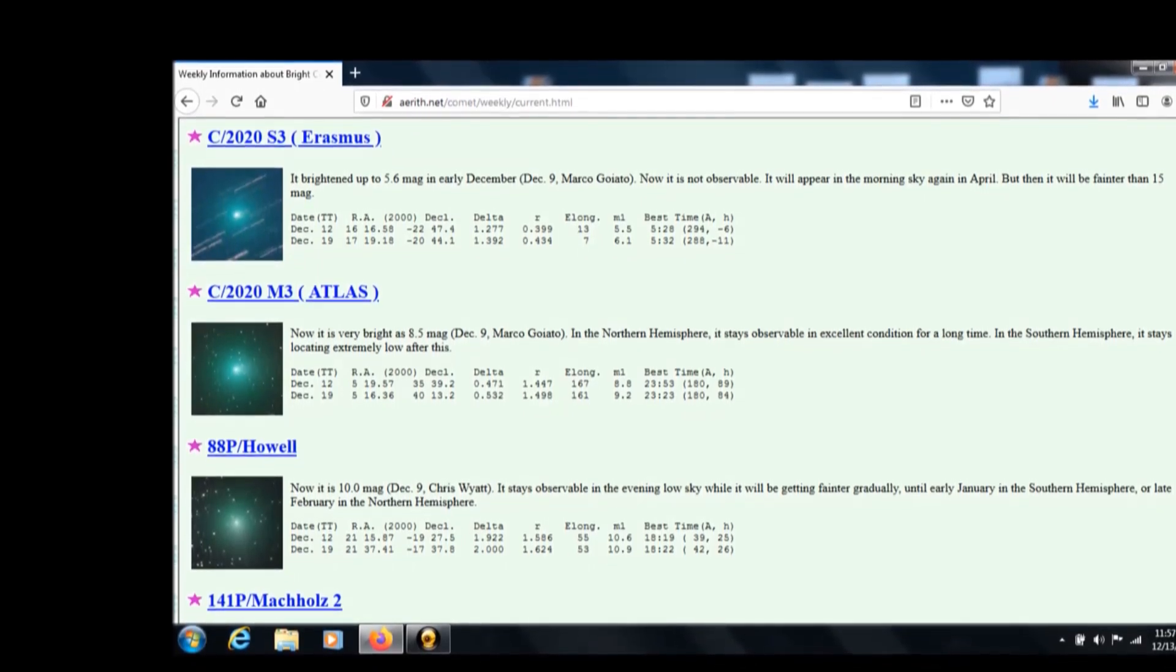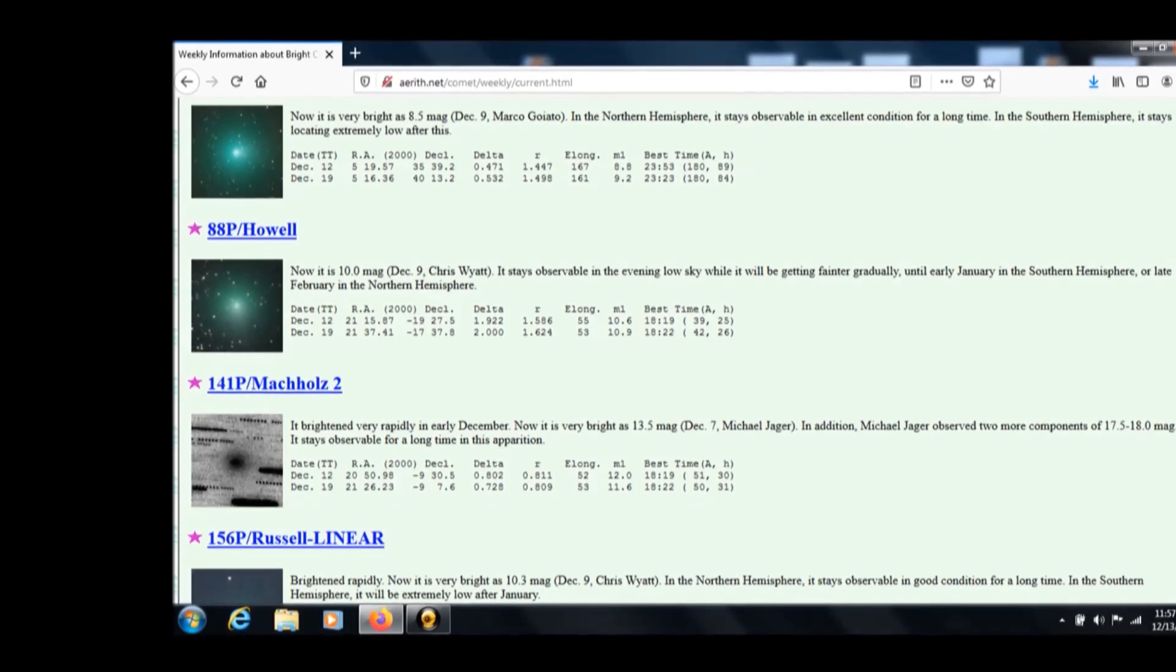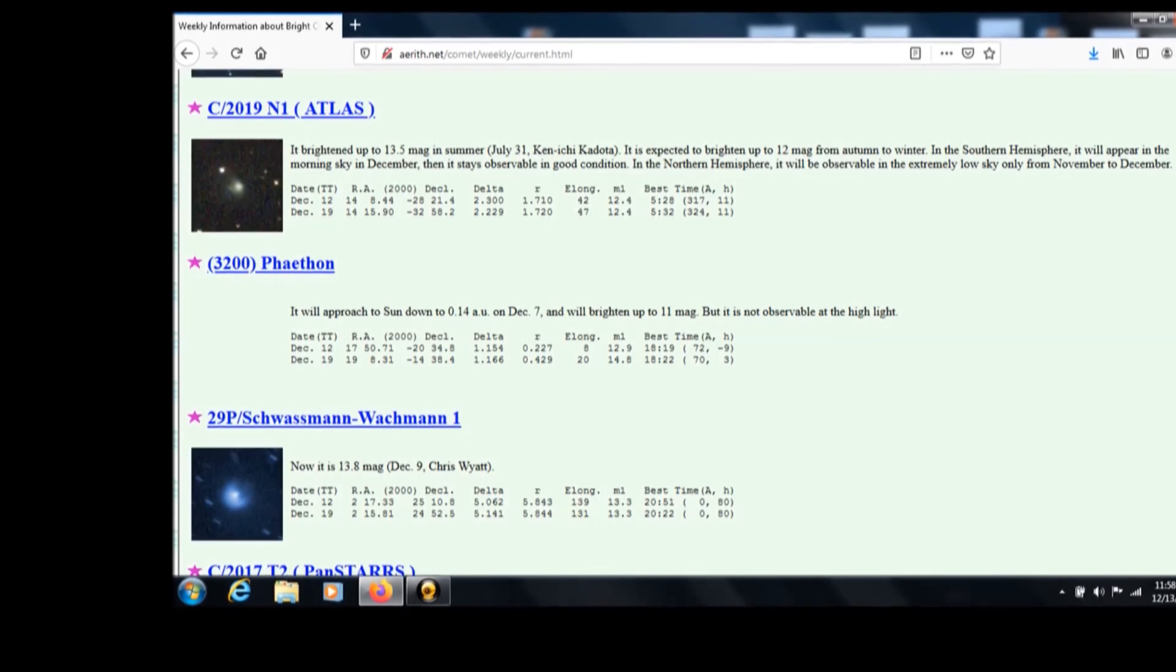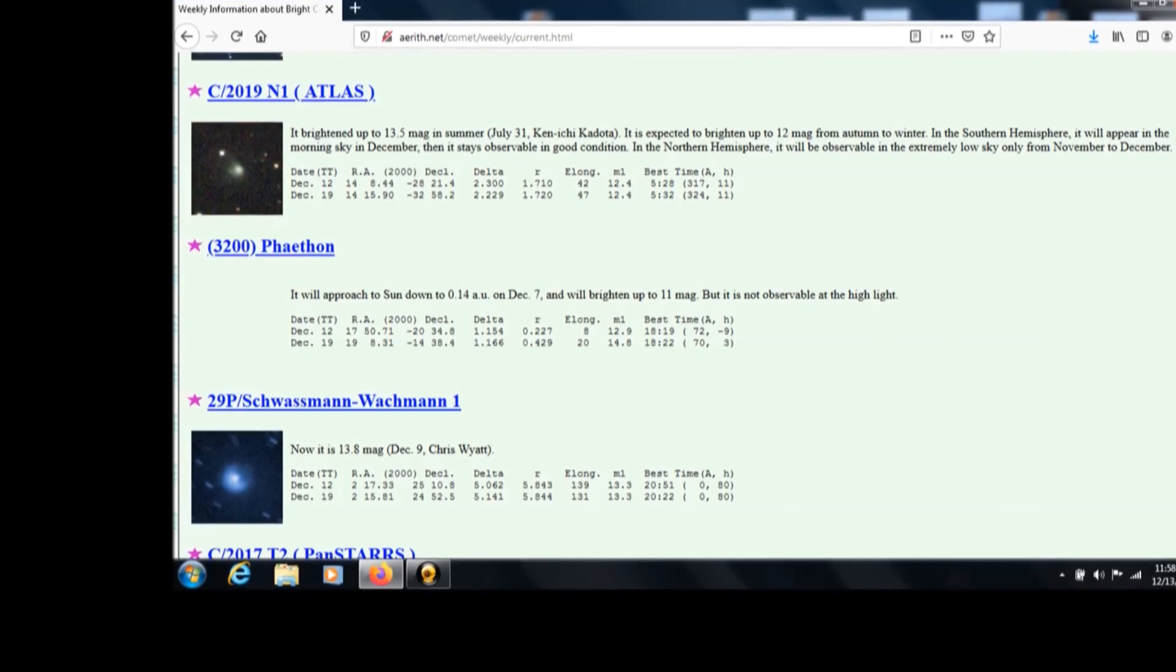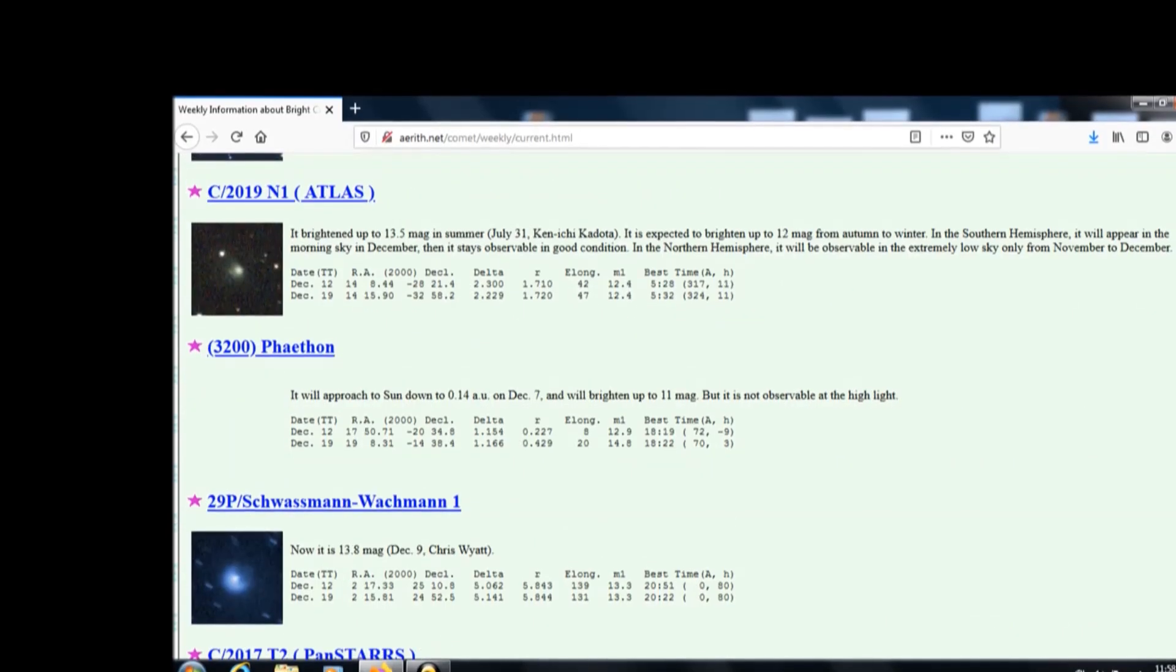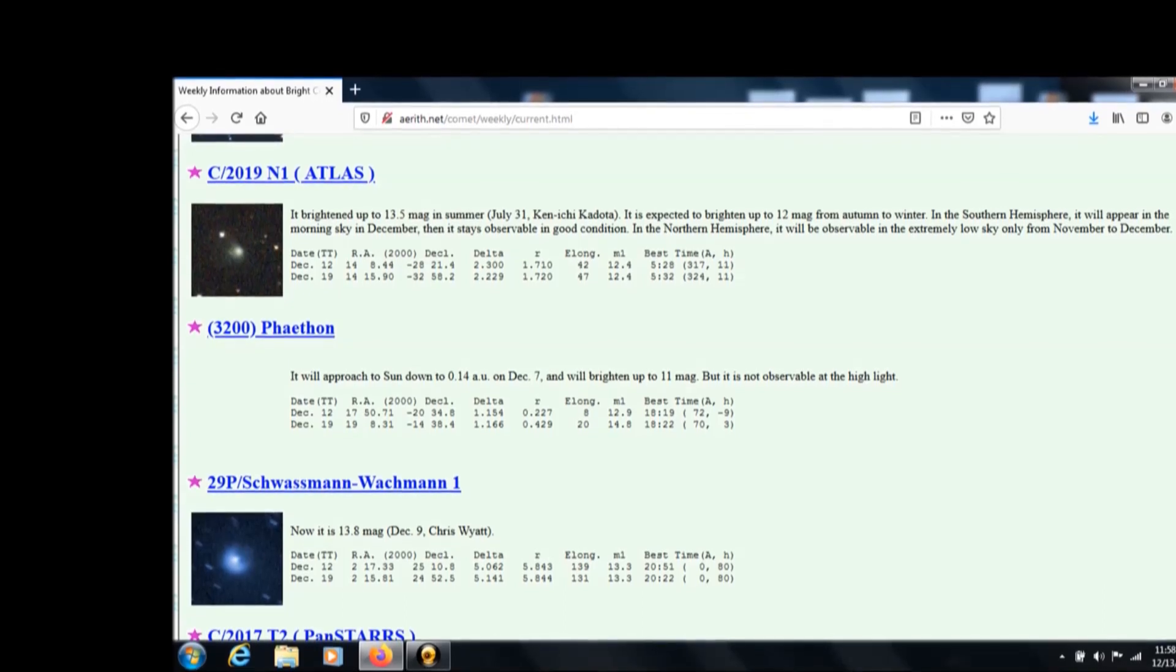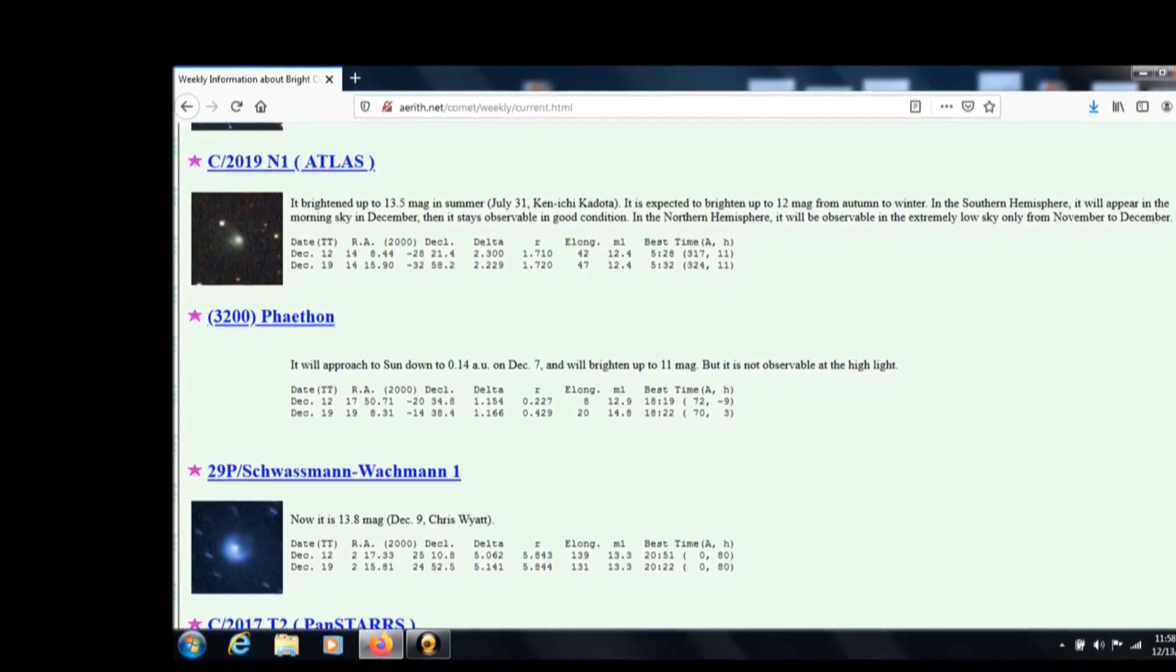141p Macholz 2. Somebody was very belligerent, told me the comets I was showing was Macholz 2, which cannot be. Macholz 2 cannot and should not be crossing underneath Earth or by Earth for another few days. Yet we see a complete transit of a comet we cannot identify visible on SOHO satellite. 141p Macholz brightened very rapidly in December. It is now 13.5 magnitude as of December 7th. Two more fragments have been observed too, 17.5 and 18. It stays observable for a very long time.